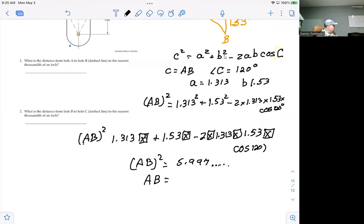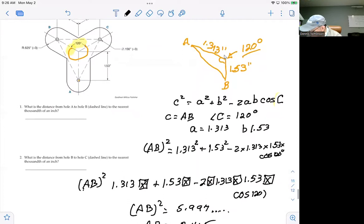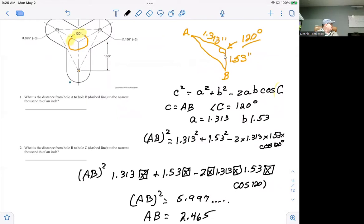And if you take the square root of both sides of that, you get that the length of side AB is equal to 2.465. Which is actually just a little bit different than what I got the first time I did this. I got 2.449. And the answer in the book is 2.465.